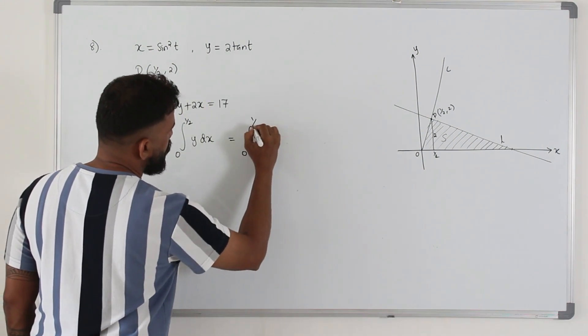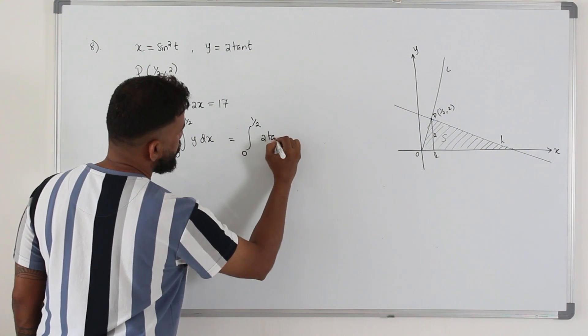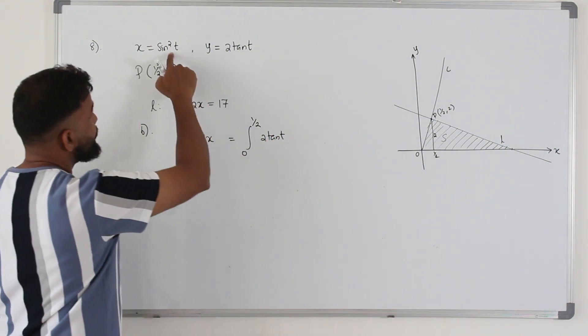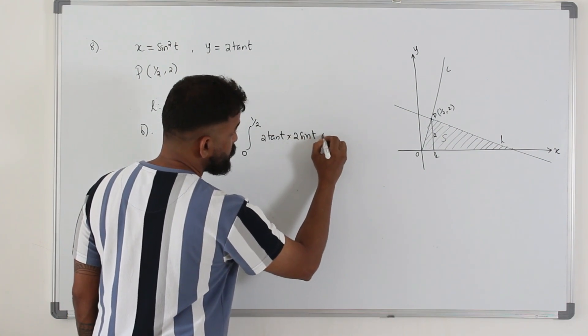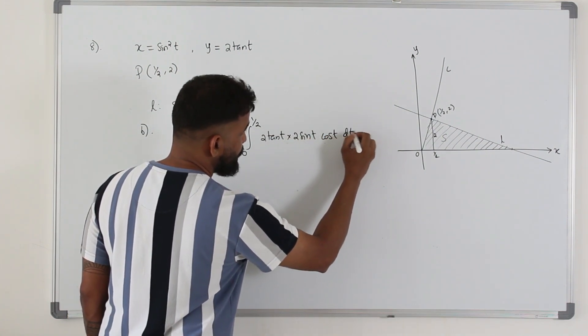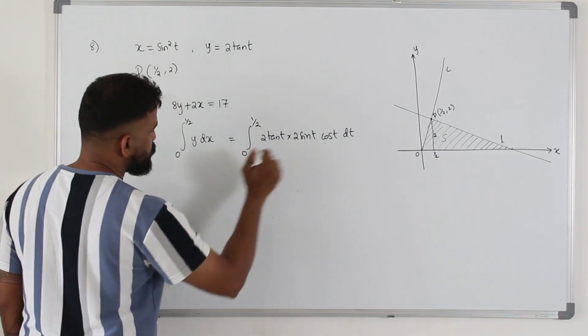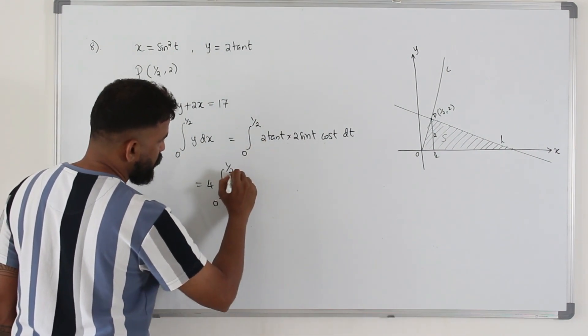So 0 to half y dx is the derivative of this. If you differentiate it, 2 sine t by applying chain rule, you get dt. So it's 2 times 2 is 4 integral 0 to half.